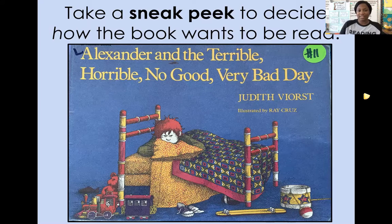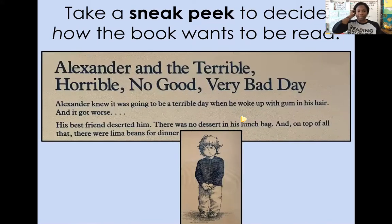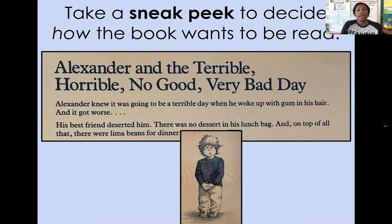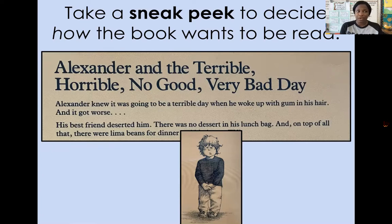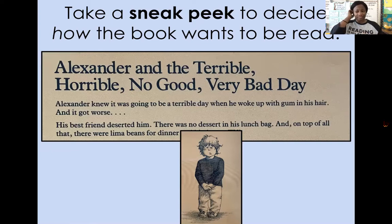Look at that character's face — oh my goodness. Let's look at the back blurb and see if we get any more ideas of how the book wants to be read. It says: 'Alexander knew it was going to be a terrible day when he woke up with gum in his hair — and it got worse. His best friend deserted him, there was no dessert in his lunch bag, and on top of all of that, there were lima beans for dinner.' I hope that you are thinking what I'm thinking — that this book wants to be read in a very frustrated, angry voice, because it seems like there are just horrible things going on with Alexander's day. We wouldn't want to read this book in a happy, lucky, singing voice — that wouldn't make sense. We use that sneak peek to help us decide how the book wants to be read.